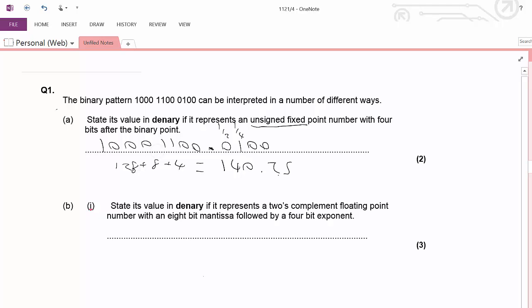Okay, and the next one. It says state its value if it's a 2's complement floating point number with an 8-bit mantissa and a 4-bit exponent.